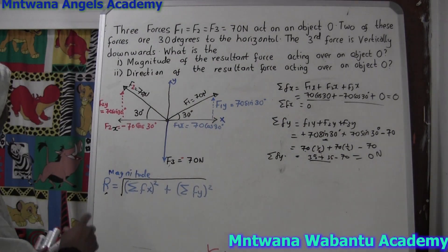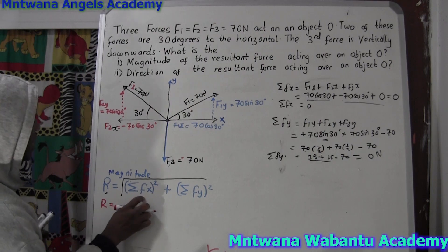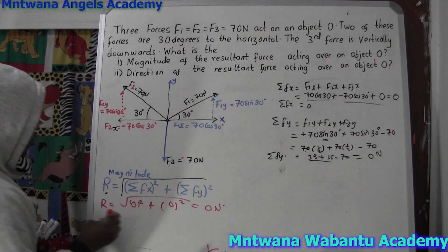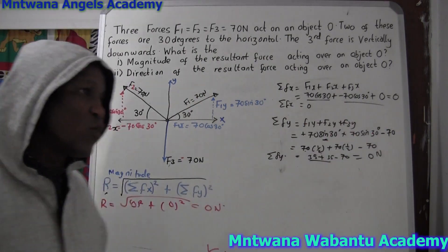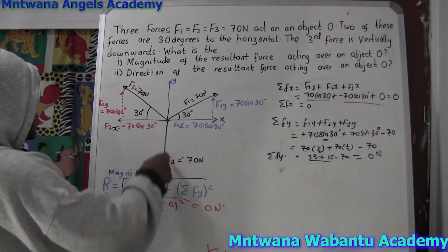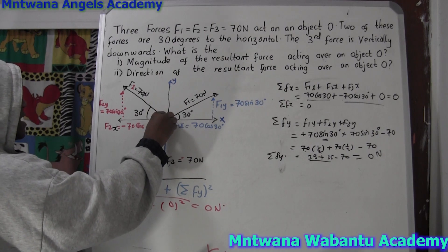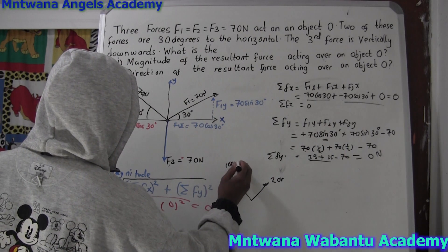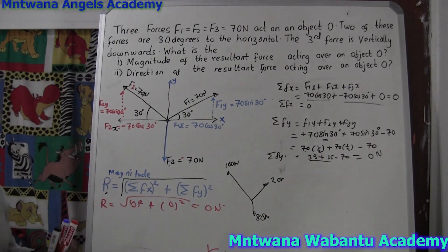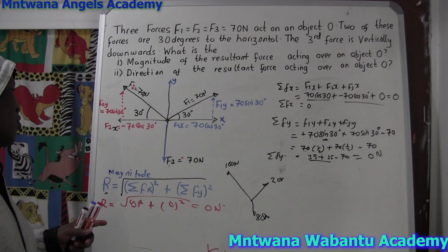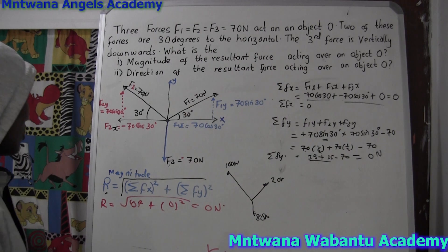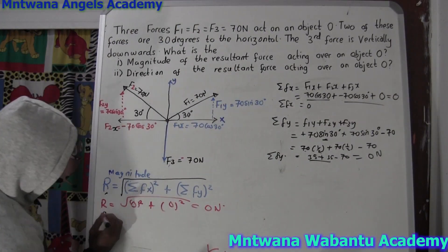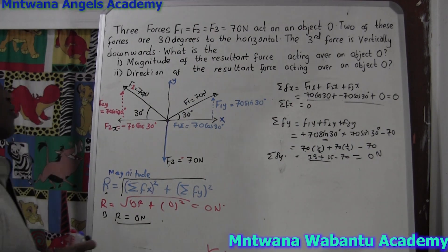Now we can find the resultant: R = √(ΣFx² + ΣFy²) = √(0² + 0²) = 0 newtons. So the magnitude of the resultant force equals zero. There's no resultant because all the forces are balanced — if you pull with the same force in all directions, the object doesn't move.